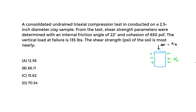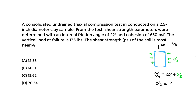We always have three stresses: the major principal stress, the intermediate principal stress, and the minor principal stress. We typically focus on the maximum and minimum — sigma 1 and sigma 3. The major principal stress, sigma 1, equals delta sigma — the actual stress applied on top — plus the confining pressure sigma 3. The intermediate stress sigma 2 equals sigma 3, the minor, in a triaxial test.